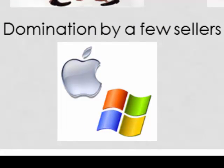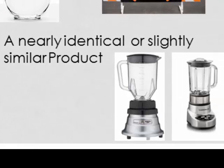Domination by a few sellers — Pepsi and Coke is an example. Now we also have an oligopoly in technology as far as operating systems. You've got Apple iOS and Microsoft Windows, and Linux is extremely small. Two companies pretty much dominate all computer operating systems. And finally, all products in an oligopoly are nearly identical or very similar — not much difference. You might have some small differences, but they're all more or less the same.